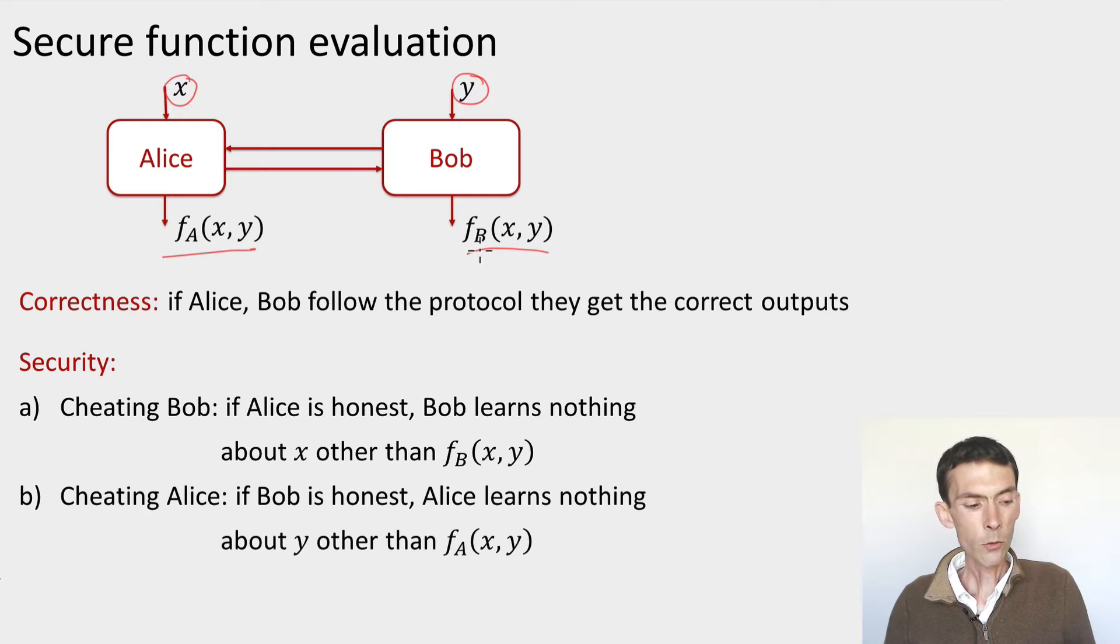For the example of the AND function, we had FA equals FB equals the AND of the inputs. But you can think of any function you like. Now we'll say that the protocol for secure function evaluation is correct if whenever Alice and Bob follow the protocol, then their outputs are indeed equal to what the function is saying their output should be. So for the AND, the protocol is correct if both Alice and Bob always output the AND of their inputs when they follow the protocol.